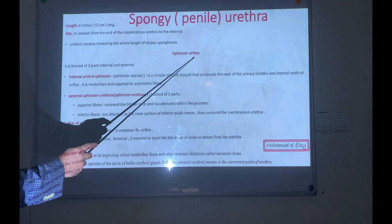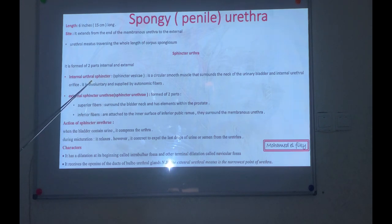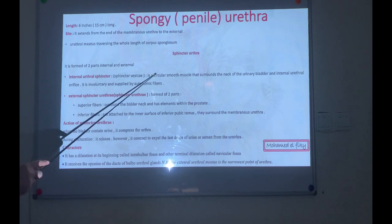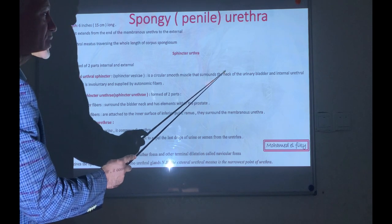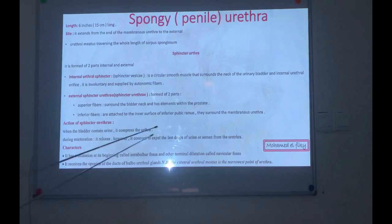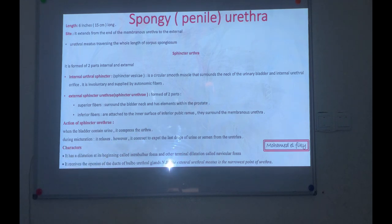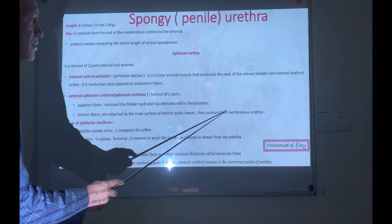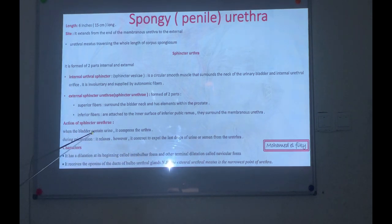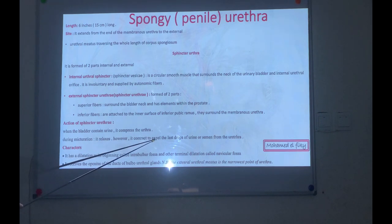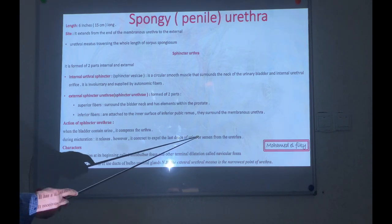There are two sphincters of the urethra: the internal urethral sphincter — a circular smooth muscle surrounding the neck and pre-prostatic part, involuntary, supplied by autonomic fibers. The external urethral sphincter has two parts: superior fibers surrounding the bladder neck with elements within the prostate, and inferior fibers attached to the inner surface of the inferior pubic ramus, surrounding the membranous urethra. When the bladder fills, the sphincter compresses the urethra; during micturition it relaxes, then contracts to expel the last drops of urine or semen.